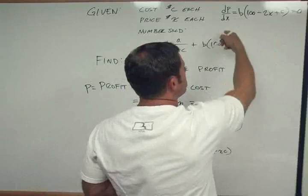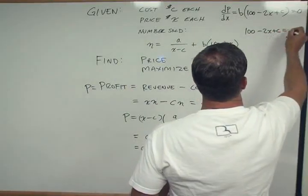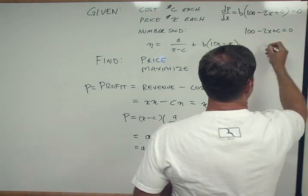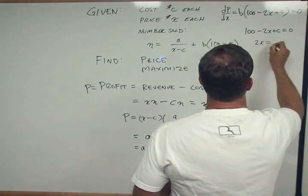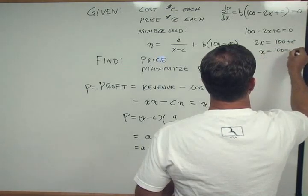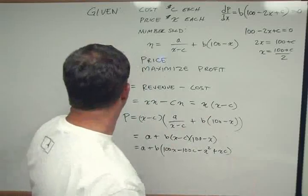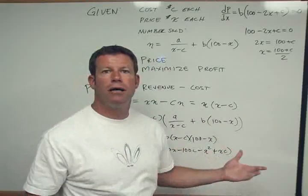So now we can solve this. The B, we can cancel. So we have 100 minus 2X plus C equals 0. Let's pull the X on one side. So we have 2X is equal to 100 plus C. X equals 100 plus C over 2. So that's the answer. We answered the question, find price. We're done.